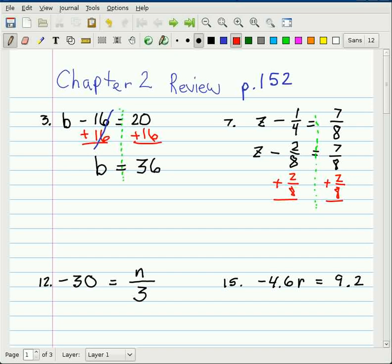And when you do that, your 2/8 cancel, which is good. We want to get z equals. So when you finish, you do have z equals 7/8 plus 2/8 is 9/8. And I prefer that you keep that as an improper fraction as long as it's reduced, which that one is.